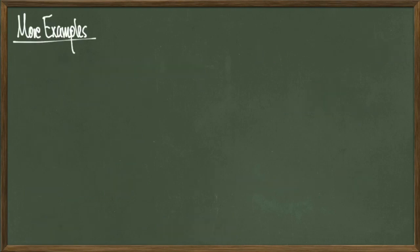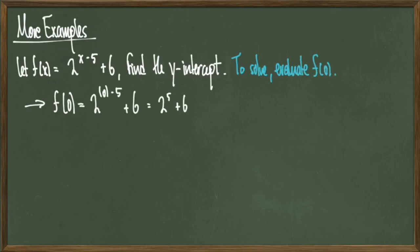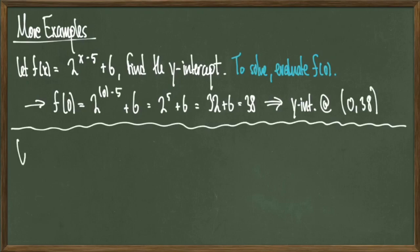So let's actually do some examples that don't involve graphing. Take the function f(x) = 2^(x-5) + 6 and find the y-intercept. In other words, we just need to evaluate f(0). Doing so, and carrying out the calculations, we see that f(0) = 38. Therefore, the point (0,38) is our y-intercept.